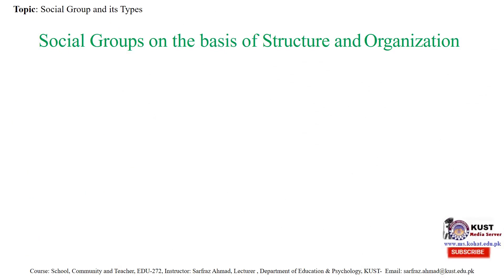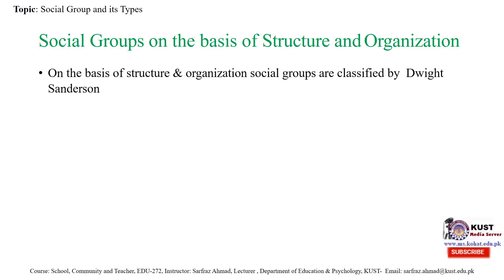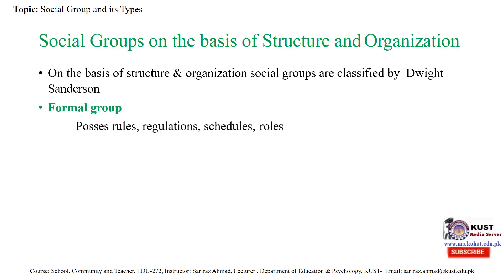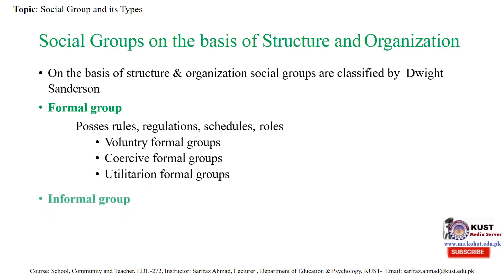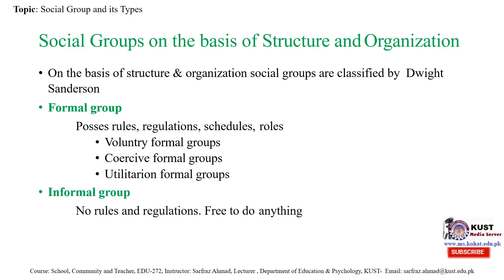Social groups on the basis of structure and organization are classified into formal and informal groups. Formal groups always possess some rules and regulations, schedules, and norms. There are voluntary formal groups, coercive formal groups, and utilitarian formal groups. Informal groups have no rules and regulations and members are free to do anything they like.